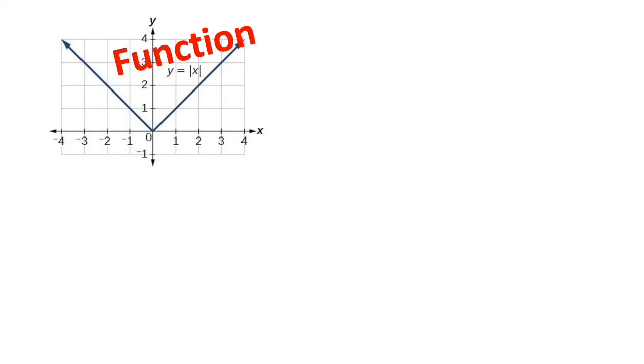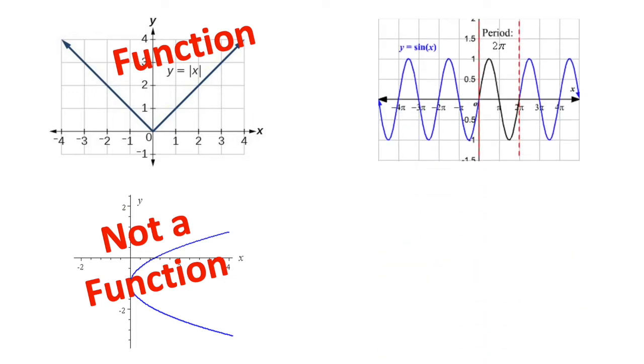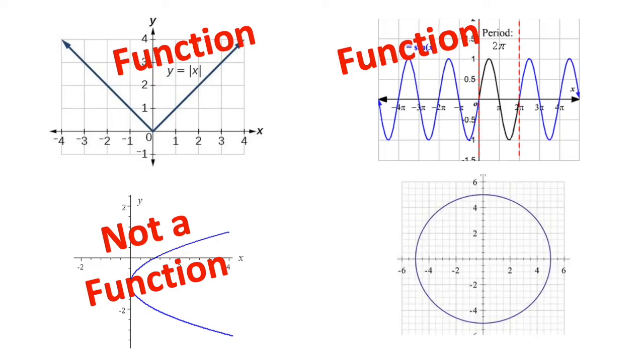Our second example is a graph of a parabola which opens to the right. If a vertical line passes through the graph and touches two points, the graph is not a function. Let's evaluate the third example. If we use our vertical line, this example is a function. Our last example is a graph of a circle. Using the vertical line test, the graph of a circle is not a function.